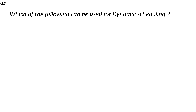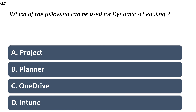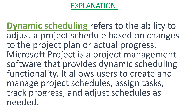Question number nine: which of the following can be used for dynamic scheduling? A) Project; B) Planner; C) OneDrive; or D) Intune. The right answer is A: Microsoft Project. Dynamic scheduling refers to the ability to adjust a project schedule based on changes to the project plan or actual progress. Microsoft Project is project management software that provides dynamic scheduling functionality, allowing users to create and manage schedules, assign tasks, track progress, and adjust schedules as needed.